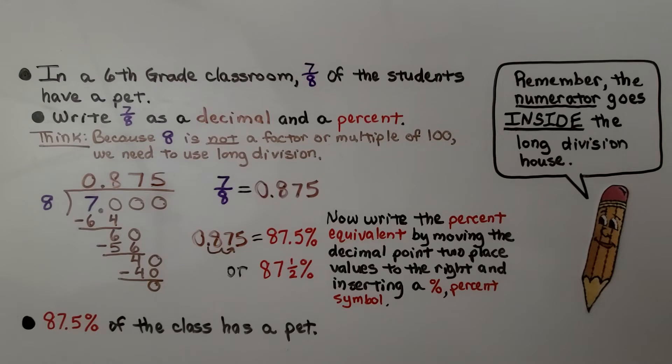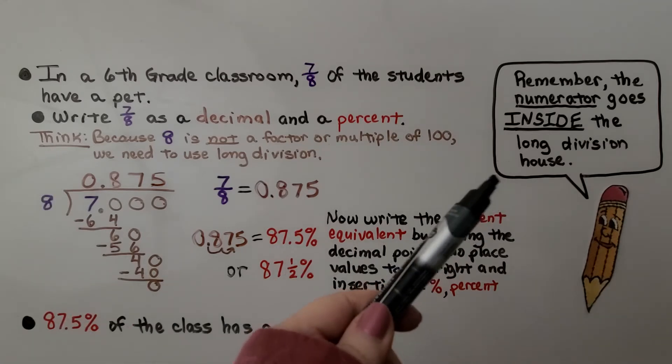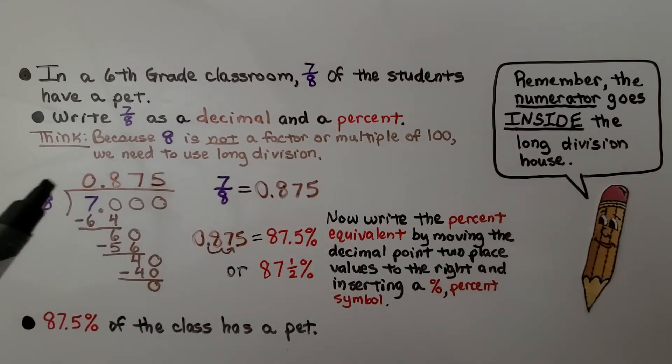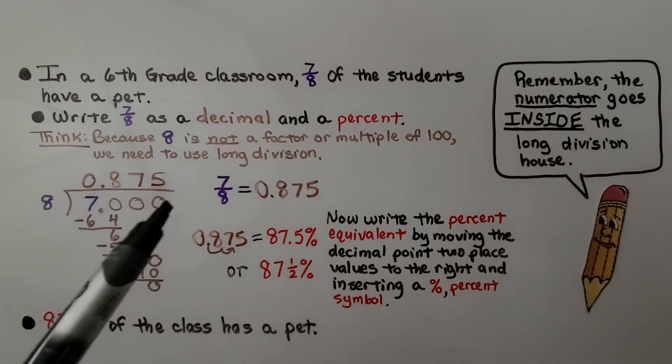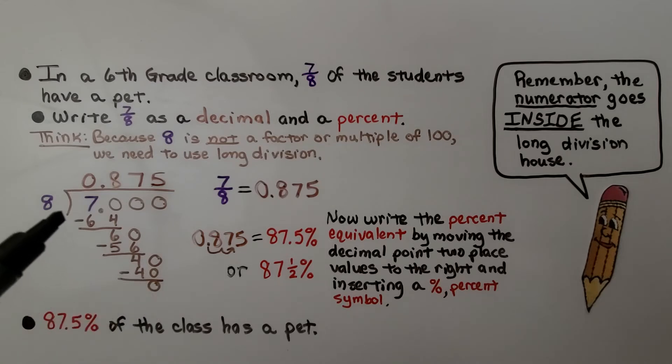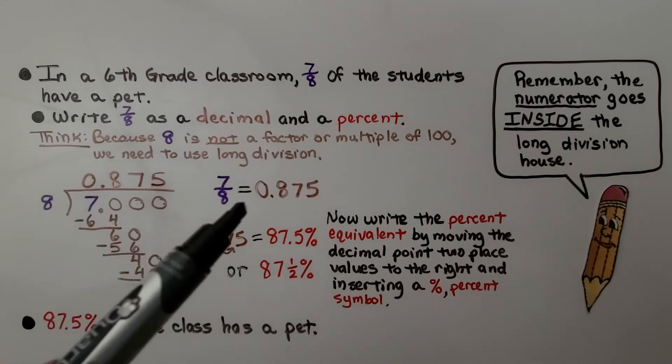In a sixth grade classroom, seven-eighths of the students have a pet. Write seven-eighths as a decimal and a percent. Because eight is not a factor or multiple of 100, we need to use long division. The numerator goes inside the long division house. 8 trying to fit into 7, it can't. It fits in zero times. We add a decimal point and some zeros to keep dividing. We do our division and see that seven-eighths equals 0.875.